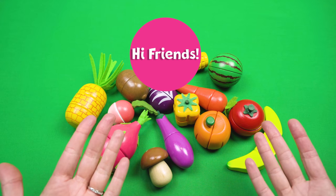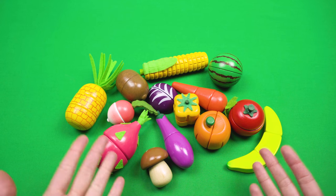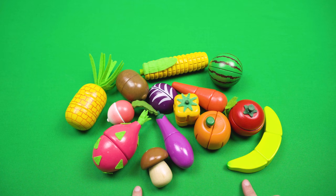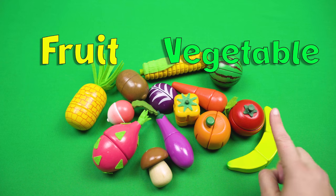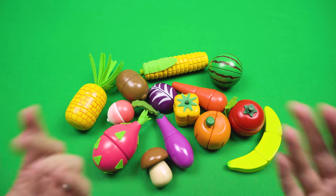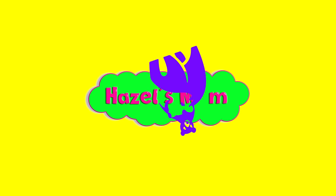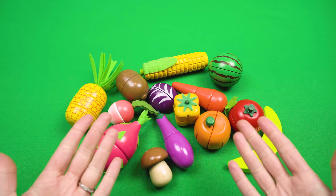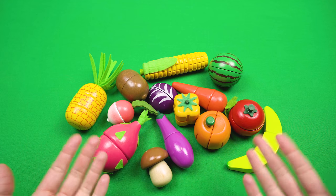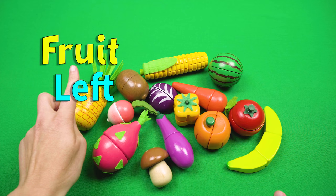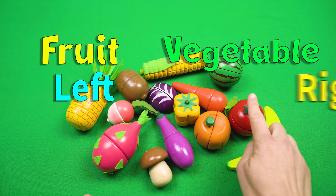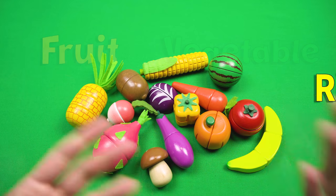Hi friends, it's Hazel's mom. Today we are going to sort our food into either a fruit or into a vegetable. Are you ready? Let's go. All right friends, let's get started. So we're going to put our fruit on the left side of the table and put our vegetables on the right side of the table. Let's get sorting.